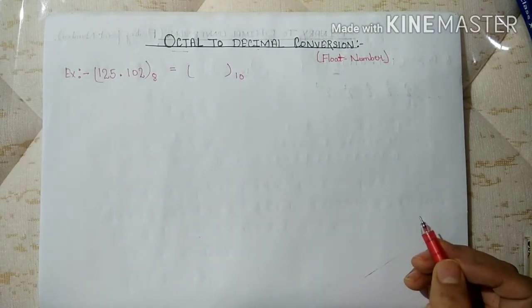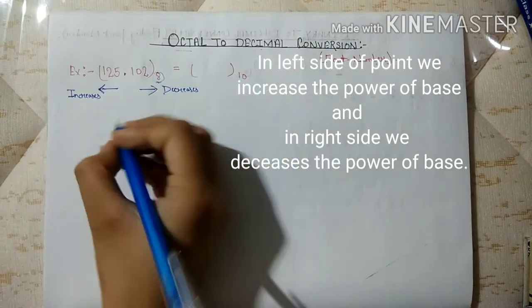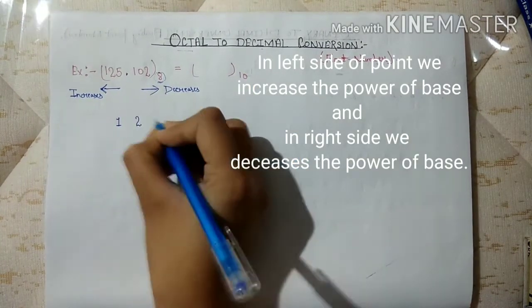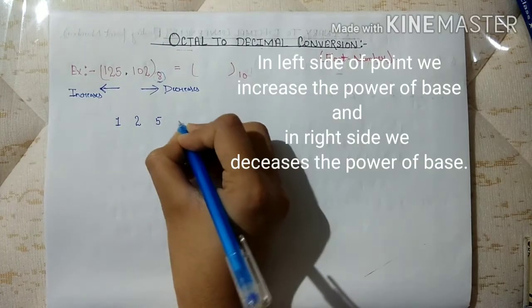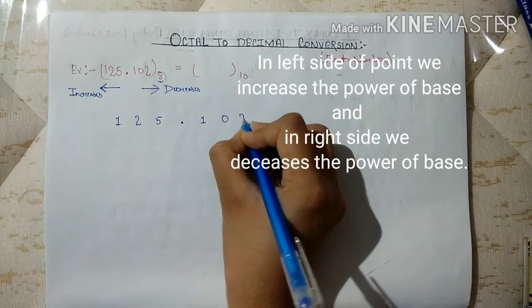The most important thing for converting octal number in decimal. First of all write this number here. 1, 2, 5, point, 1, 0 and 2.